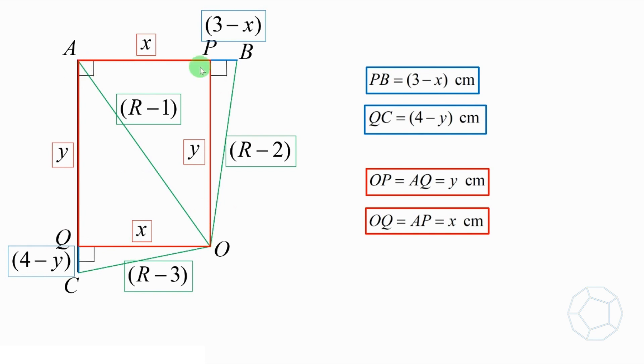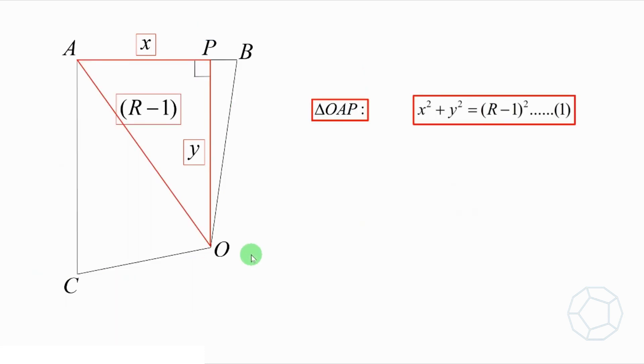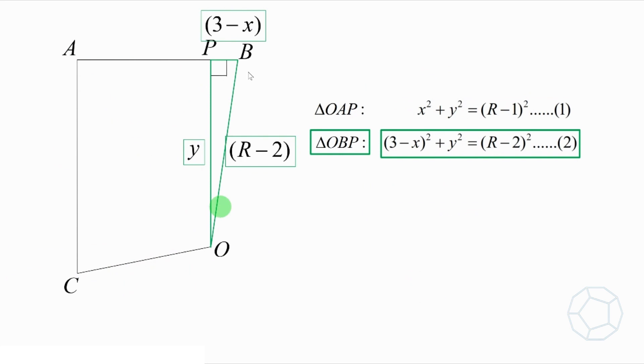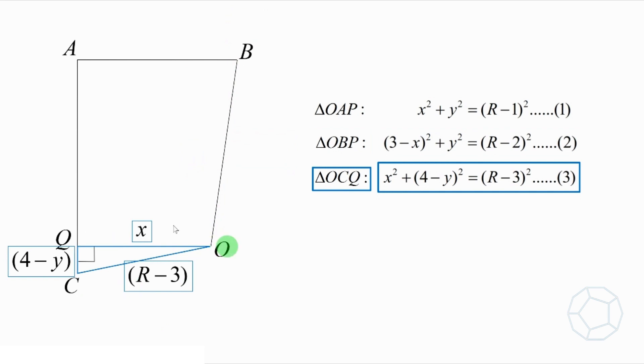So we are ready to look at three right-angled triangles. The first one is the red triangle OAP. We have X square plus Y square is equal to R minus 1 whole square. We call it equation 1. The second one is the green triangle OBP. 3 minus X whole square plus Y square is equal to R minus 2 whole square. We call it equation 2. The third one is the blue triangle OCQ. X square plus 4 minus Y whole square is equal to R minus 3 whole square. We call it equation 3.